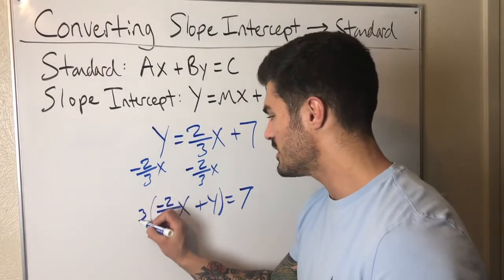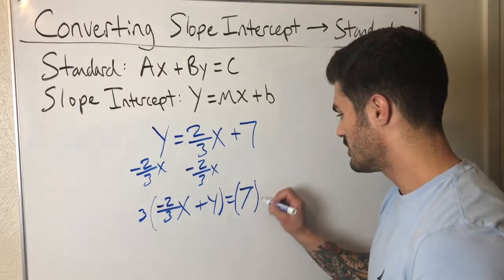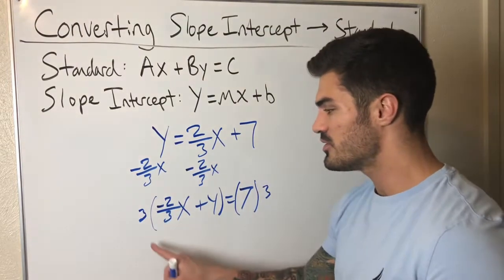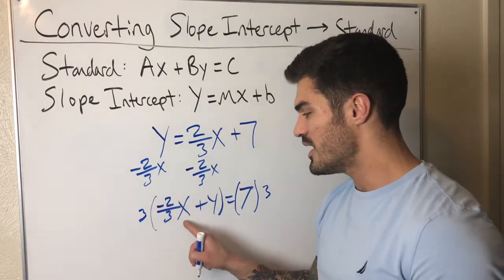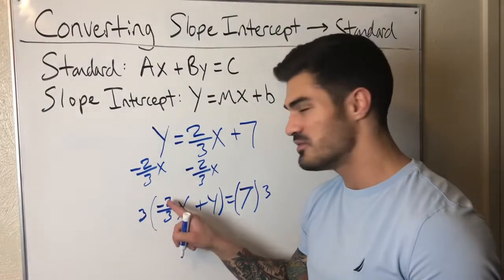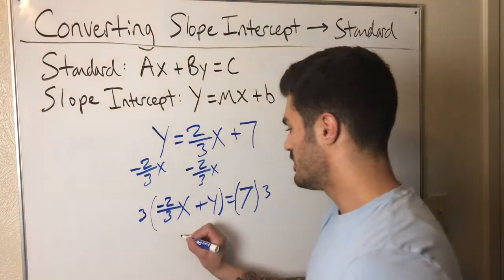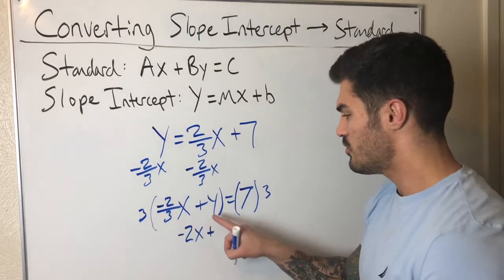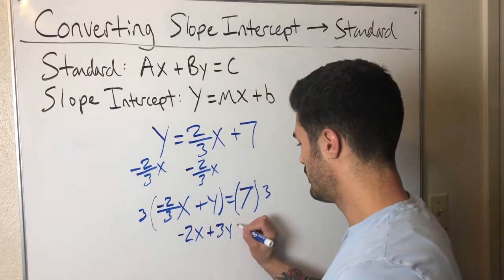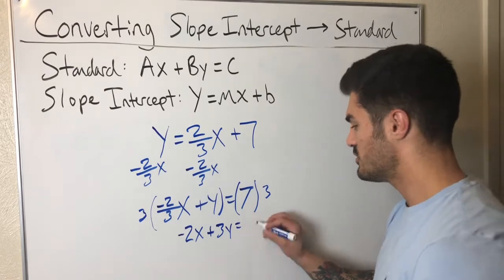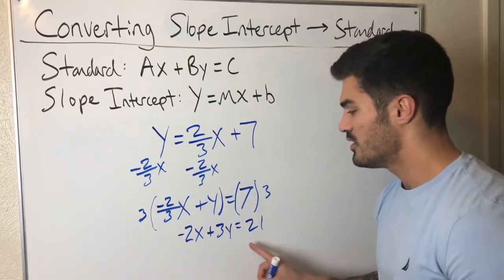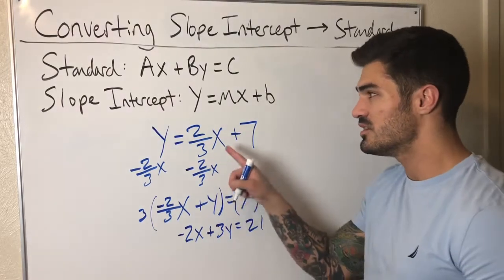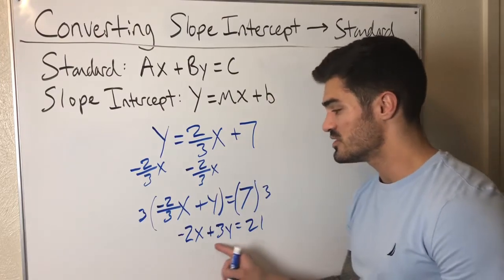So let's see what happens, how it gets rid of this denominator. Multiply both sides by three. I have negative two over three x times three. That's a negative two x, right? Negative two x plus three y equals seven times three. That's 21. And now I have converted this linear equation from slope intercept form to standard form.